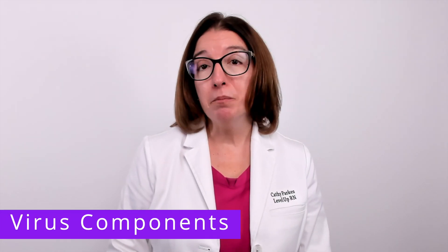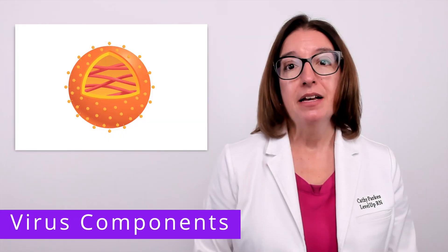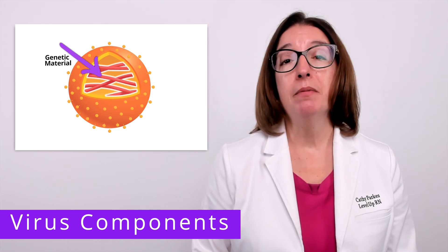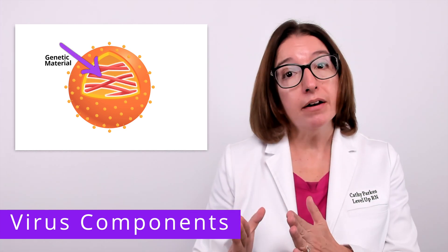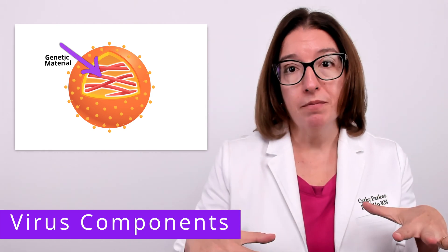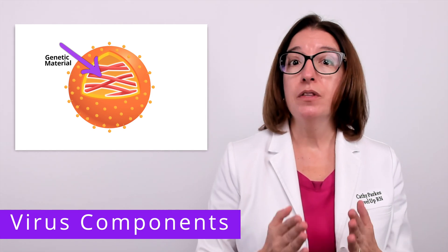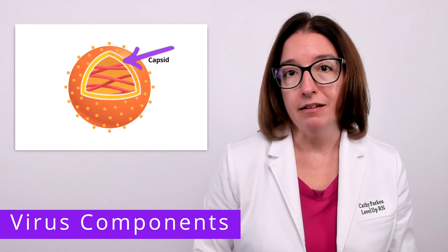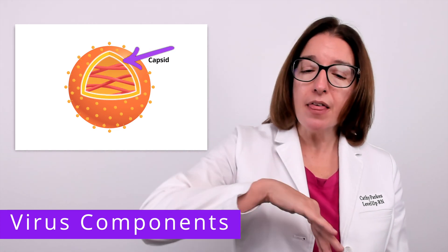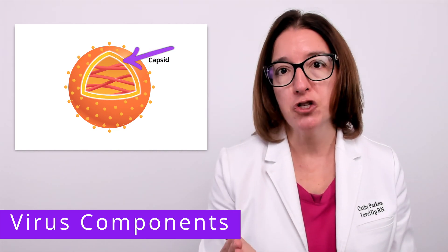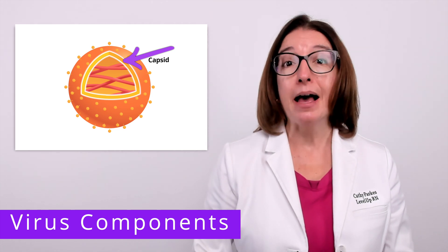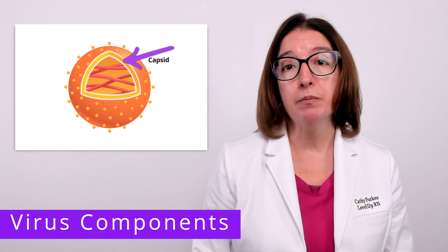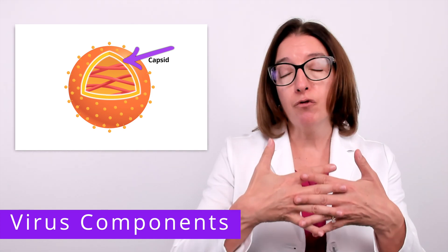Let's now talk about the different components that make up a virus. Each virus will contain genetic material — this may be DNA or RNA, but not both. In addition to the DNA or RNA, each virus will have a capsid, which is a protein coat that surrounds and protects the genetic material. The capsid is made up of capsomeres, which are protein subunits that interlock to form the capsid.